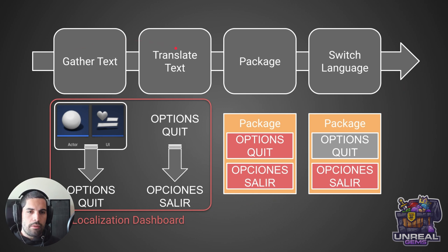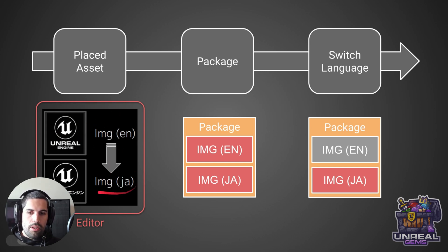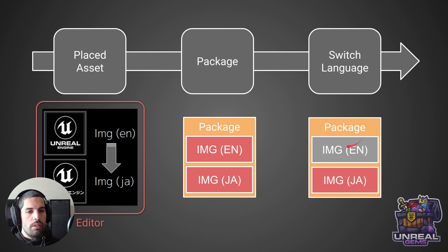For assets, we follow a similar procedure. We look for the assets we want to localize — in this case, the Unreal logo in the content browser. We have the Unreal logo in English and we want to localize it to Japanese with Japanese letters. We do that in an external program and tell the engine to use that version. The engine packages both the English and Japanese versions of the image, and last but not least, we switch the language based on what the user wants — here we selected the Japanese image, and that's what is displayed in-game.